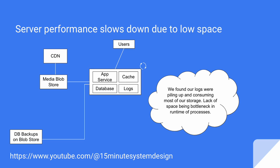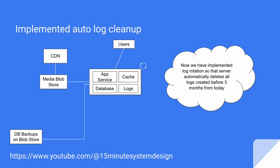After some time, we start seeing server performance going down again. We notice that our storage is increasing abnormally and our logs are taking most of the space, and this lack of space is causing our processes to slow down. To fix this, we write another cron job to automatically delete logs older than three months, scheduled to run every week. We no longer see any issue with space being consumed by logs.